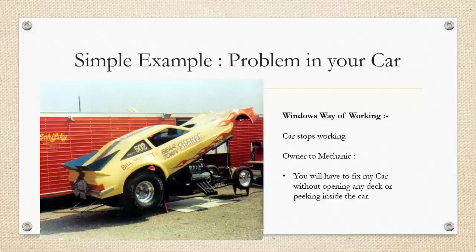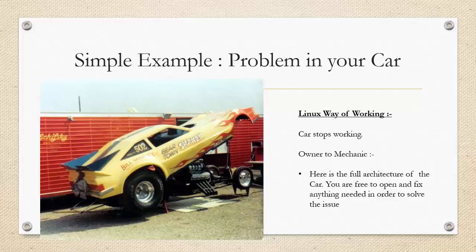Now let's take the same example but change it to the Linux way of working. Your car stops working, you call a mechanic, but instead of telling them to stay 5 feet back, you give them the whole architecture diagram of the car and tell them they are free to open any part inside the car and fix any issue as long as the car starts working. This is basically the Linux way of working. In Linux, everything is open source — you can view the source code of the kernel, memory management, driver software, and anything you want. So it becomes much easier than Windows to make and troubleshoot problems related to various security tools.